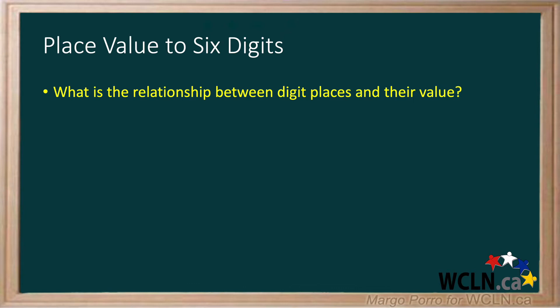Place value to six digits. Thanks to place value, any number can be made from just 10 digits, 0 to 9. What is the relationship between digits placed and their value? Let's take a look using whole numbers with up to six places.